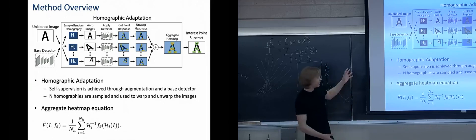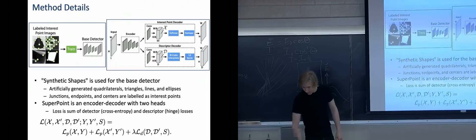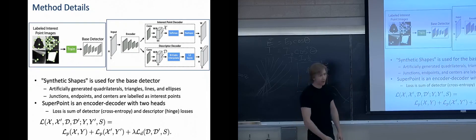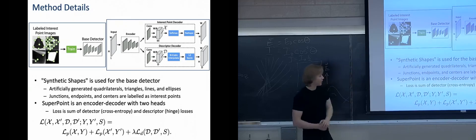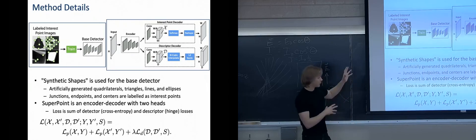So what is the base detector that they actually use for this in SuperPoint? That is trained on a dataset called synthetic shapes, which you see in the top left some examples for that. It's generated quadrilaterals, triangles, lines, and ellipses, along with interest points which are consistent across the different views, which are basically just the corners and endpoints and centers of those shapes.